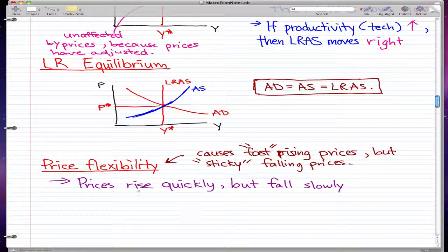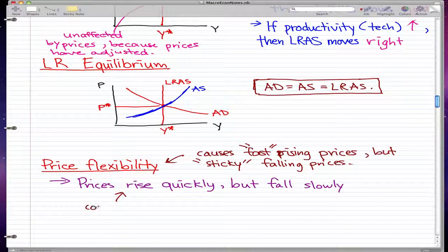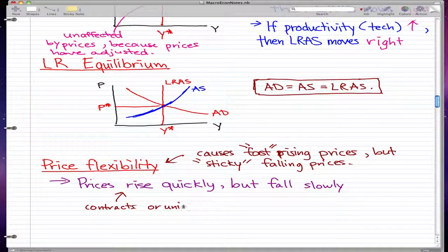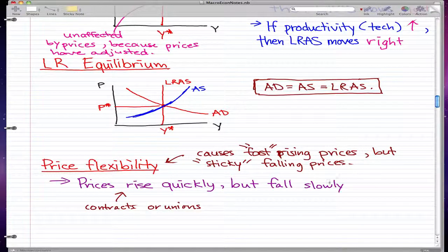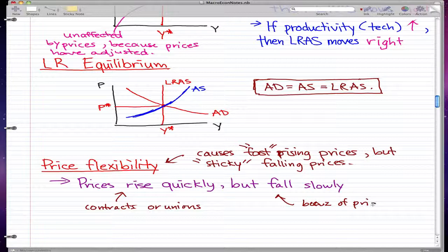Some reasons why prices rise quickly is because of contracts or unions. And some reasons why they fall slowly is because of pride—nobody wants to work for a lower wage.